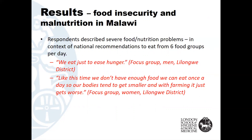The respondents described severe food and nutrition problems in rural Malawi. A group of men said, 'We eat just to ease hunger.' A group of women talked about not having enough to eat at that time of year, so their bodies tended to get smaller, and with farming, it just gets worse.